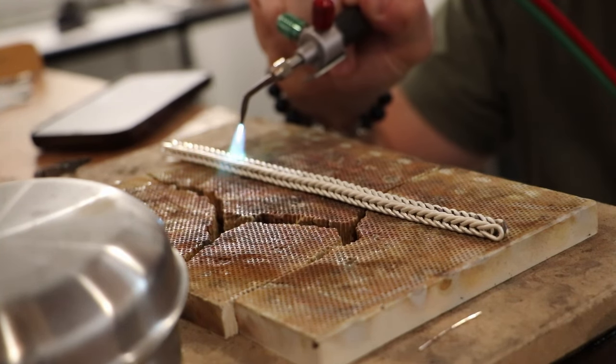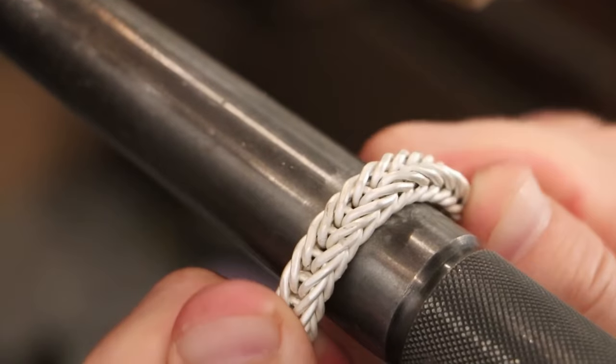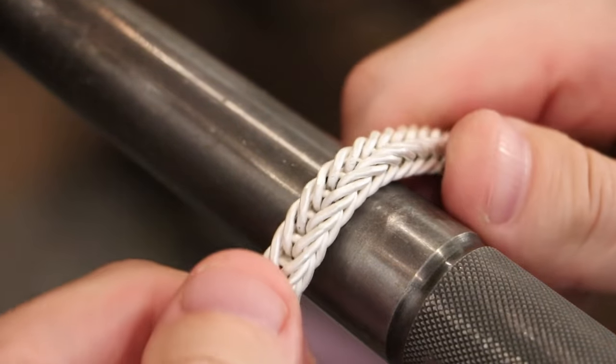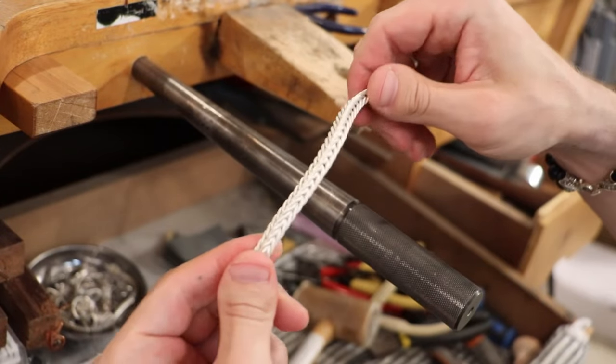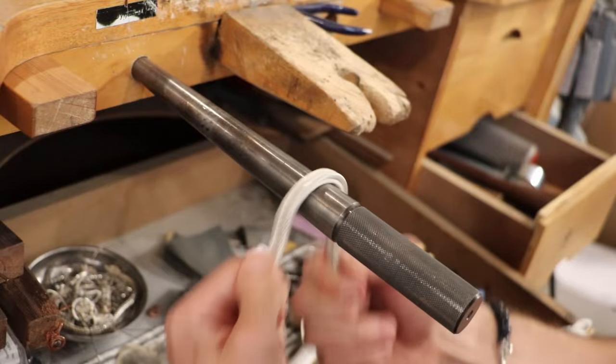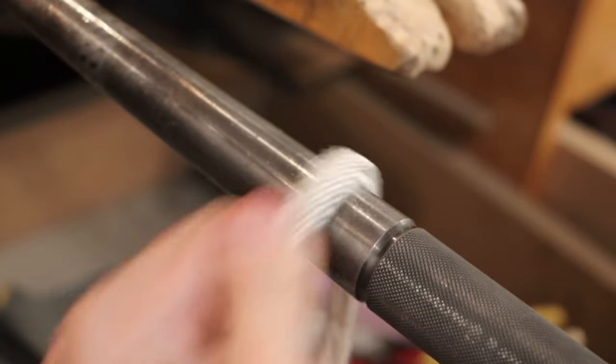Attention to detail is crucial here. Even a small mistake can mean starting over. Then decoration and intricate details are added. Techniques vary, from etching and engraving to setting stones and applying finishes. Each step requires patience and precision, reflecting the artist's skill and dedication to their craft.